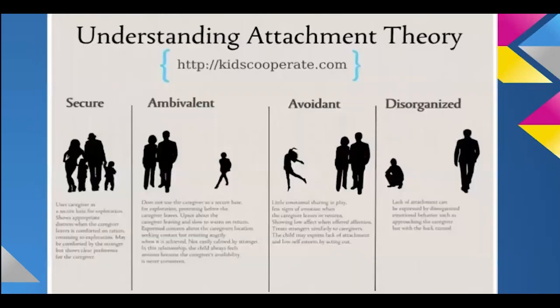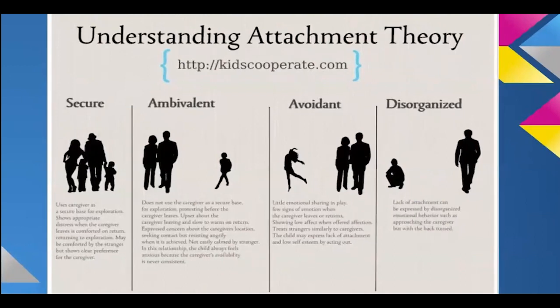Going back to the four types of attachment — originally three, with the fourth added later. In secure attachment, children use the caregiver as a secure base for exploration, show appropriate distress when the caregiver leaves, and are comforted on return. The inner working model for secure children says: I find it relatively easy to get close to others and I am comfortable depending on them. I don't worry about being abandoned or about someone getting too close to me.